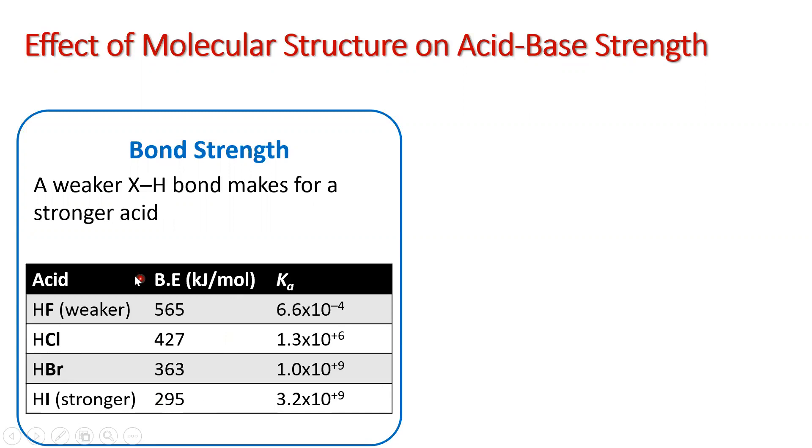So let's just look at this table, generally speaking. We've got hydrofluoric, hydrochloric, hydrobromic, hydroiodic acid. BE stands for bond energy, how much energy is required to break that bond. As we go down the group, the bond energy decreases.